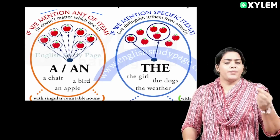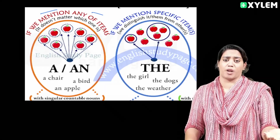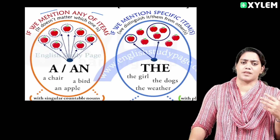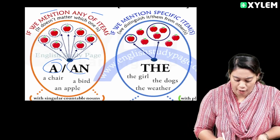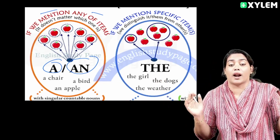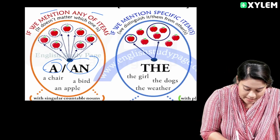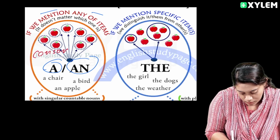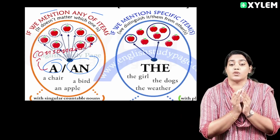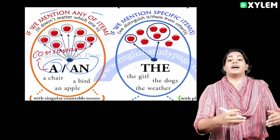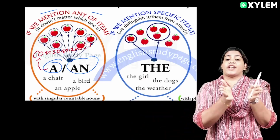We use 'a pen', 'a book'. We use 'a' as an indefinite article. That's why we use A. We use: a book, a cat, a man, a pen. Next one is 'an'.